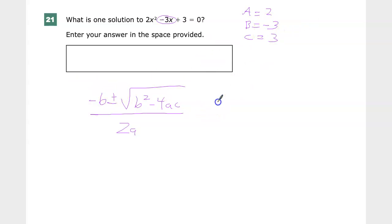So negative b, if it's negative negative, you can do it this way if you want. Or you can say, well, if it's negative negative, it's really positive, which is what I'm going to do. And then I'm going to deal with plus or minus. b is negative 3 squared minus 4 times 2 times 3 over 2 times 2.